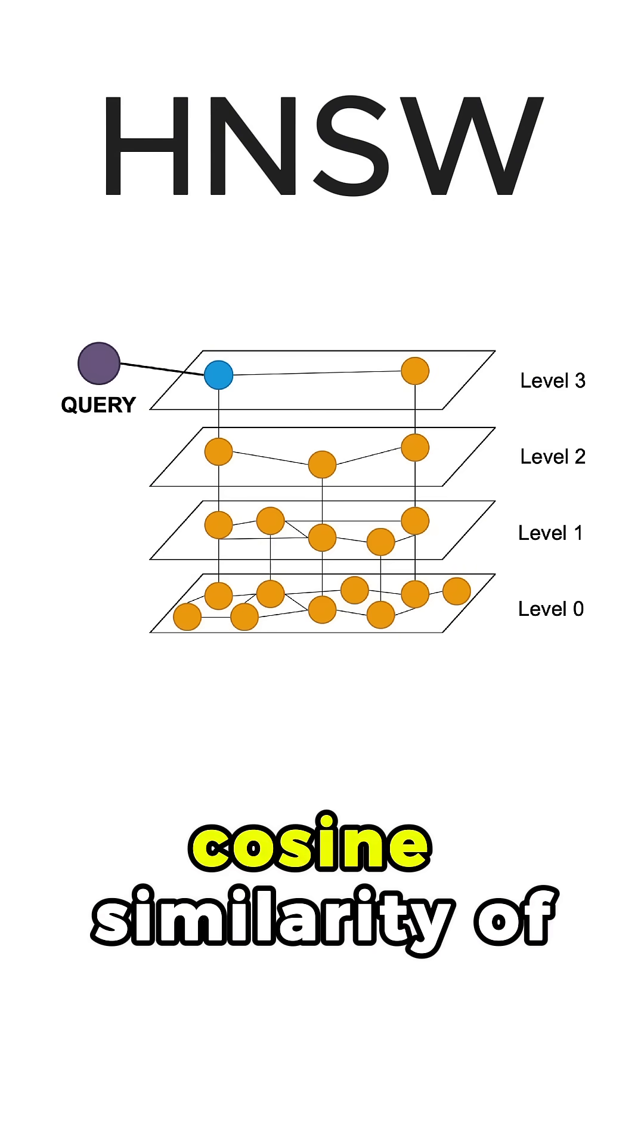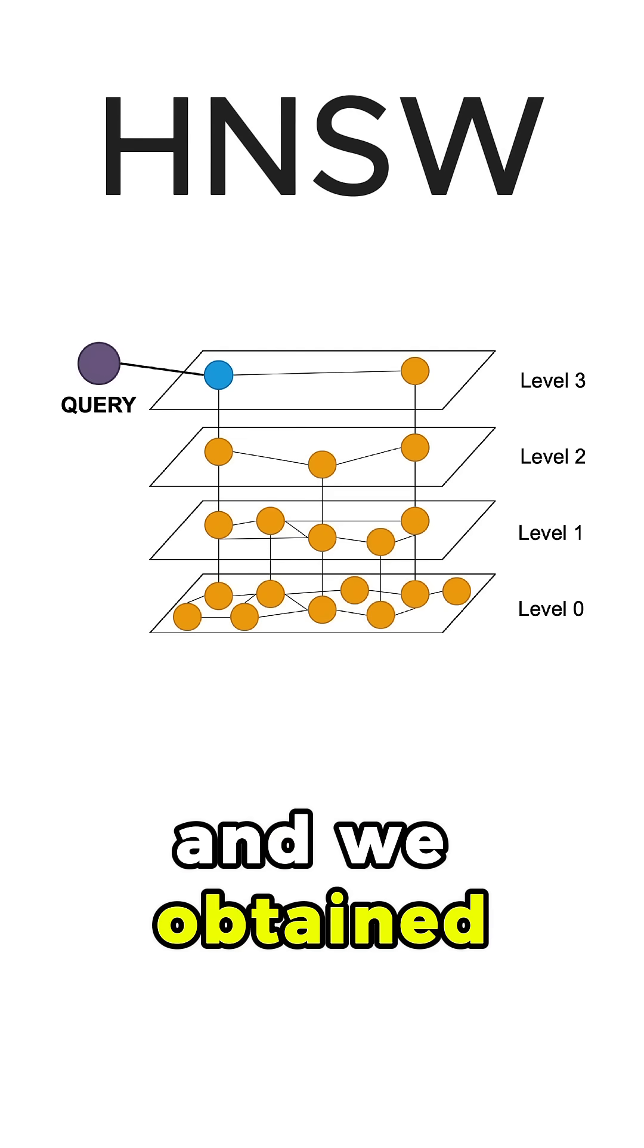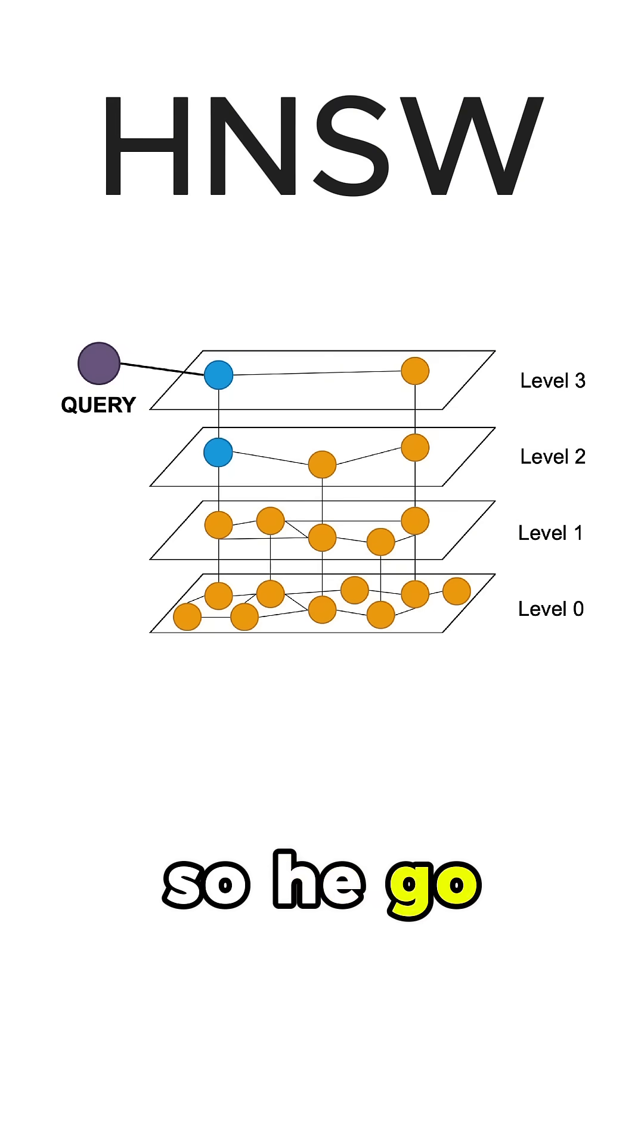Now we compare the cosine similarity of this node and all of its neighbors with the query, and we obtain, for instance, that this node is closest, so we go down.